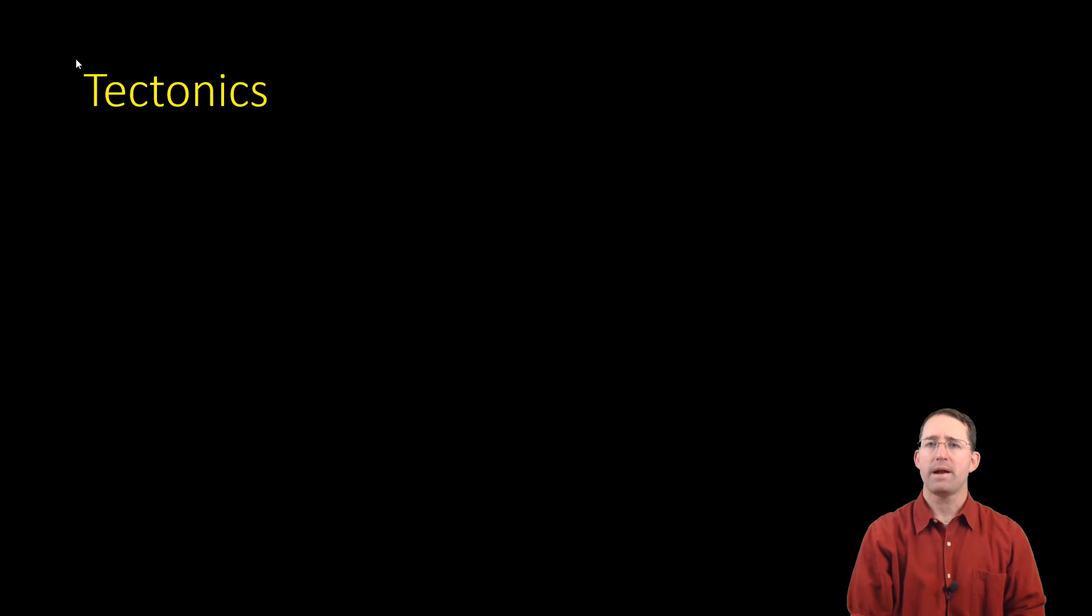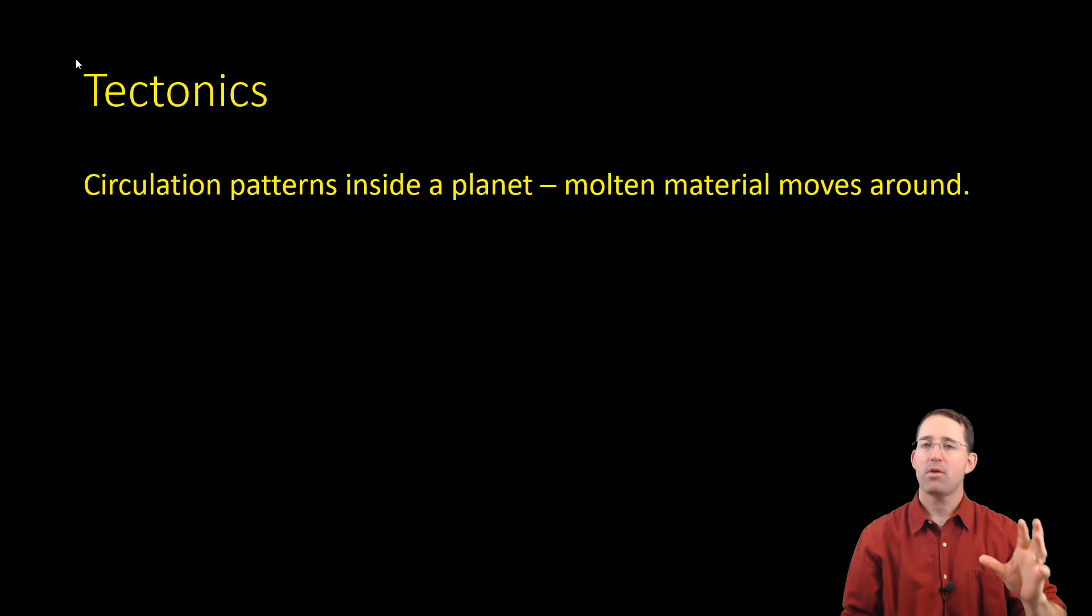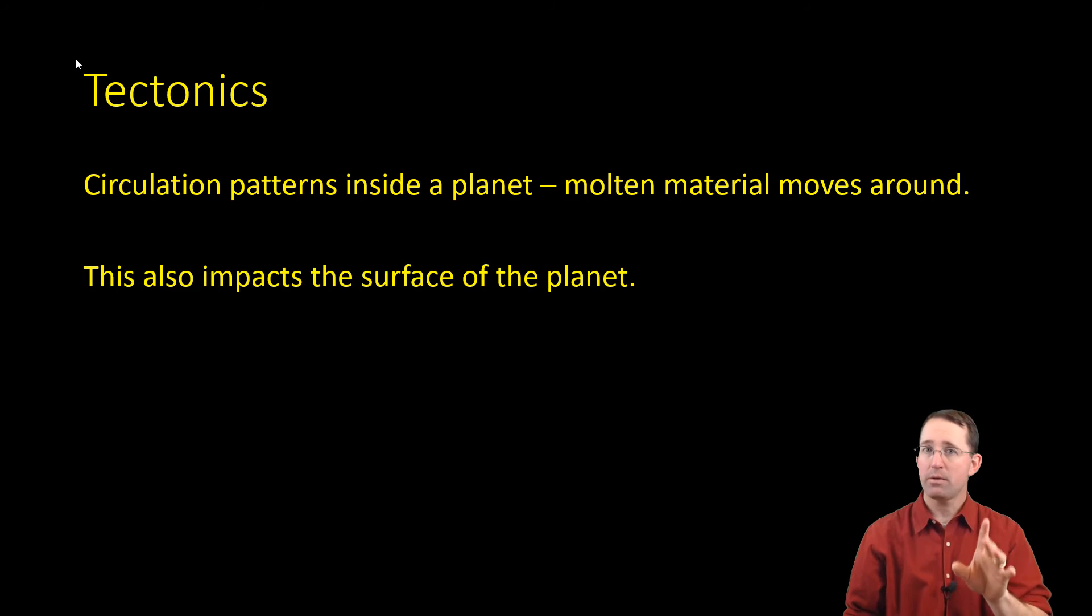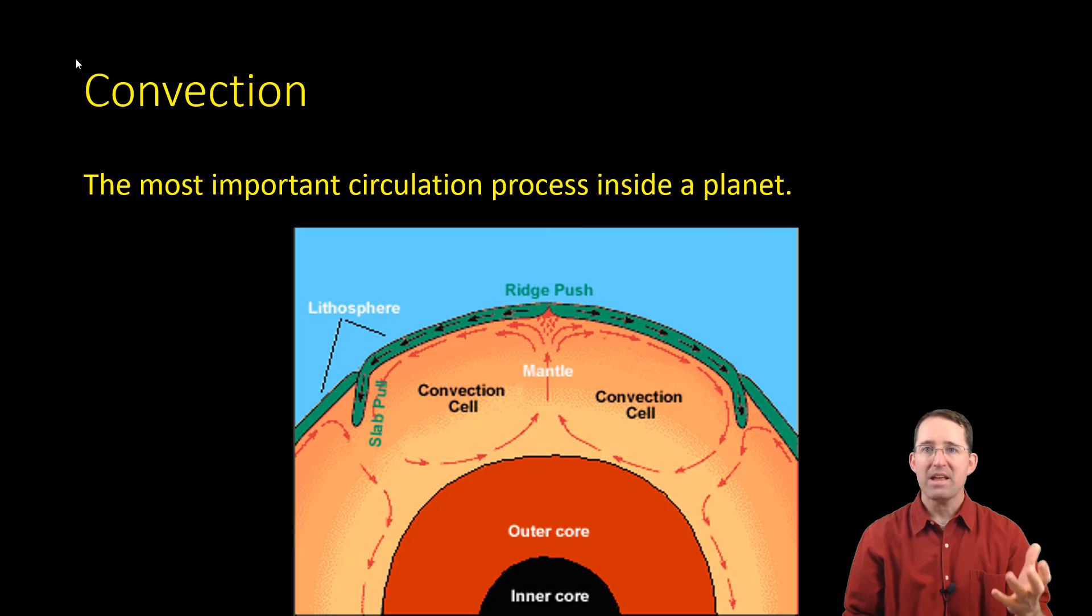Okay, enough magnetic field stuff for right now. Let's begin moving back inside the interior of a planet. We're going to take a look at tectonics. What are those? Basically, tectonics are the interaction of a planet's interior with its crust. Now, what's happening is you have all kinds of circulation patterns inside of a planet's, molten material moving around, and this is going to not only generate a magnetic field, it's going to have an effect on the surface of a planet as well. This is a basic schematic of what a convection cell looks like.